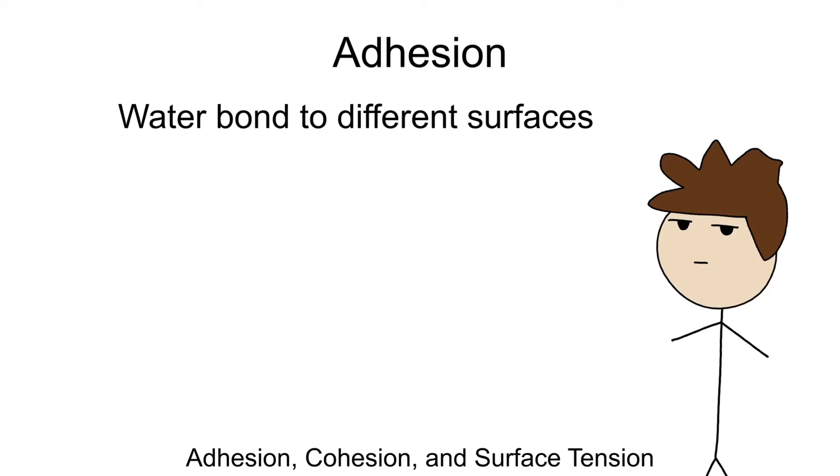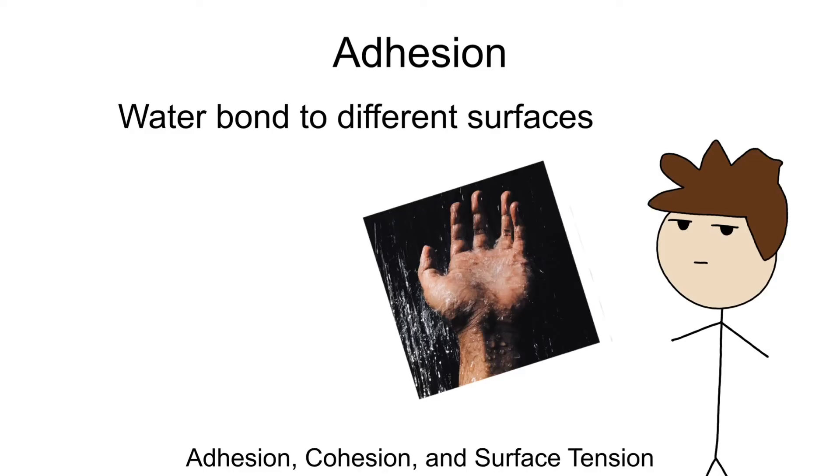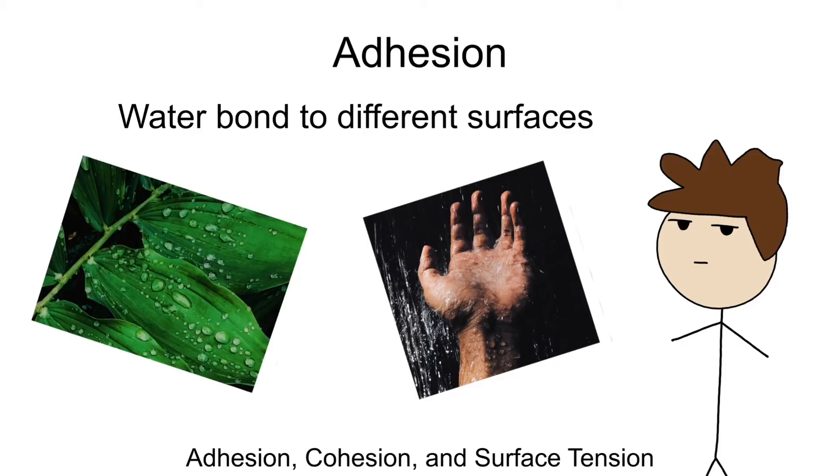Adhesion in the context of water is how water, for example, clings to the surface of your skin after you've washed your hands, or it can be found hanging over those leaves on a tree after the rain.